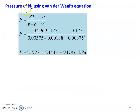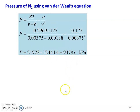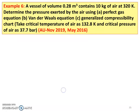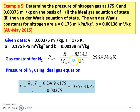Using the Van der Waals equation, pressure P equals RT divided by (V minus B) minus A divided by V squared. Substituting: R = 0.2969, T = 175, V minus B = 0.00375 minus 0.00138; A = 0.175 and V squared = 0.00375 squared. The first term gives 21,923 and the second term gives 12,444.4, so pressure equals 9,478.6 kilopascal. These are the two answers using the ideal gas equation and the Van der Waals equation.